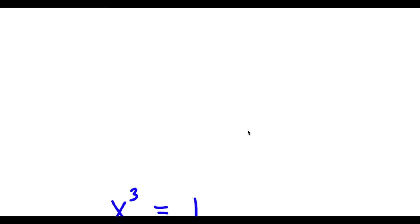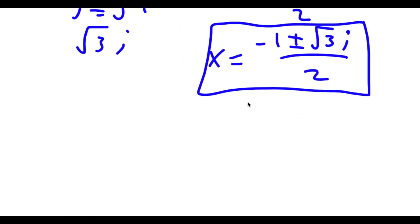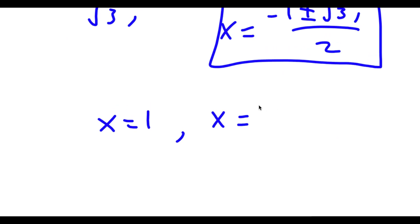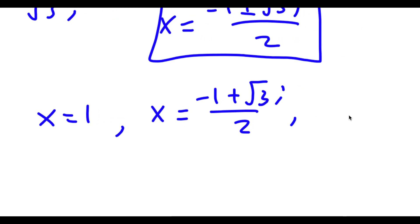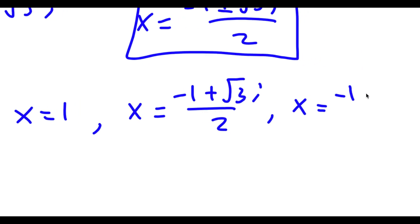So these are actually our three solutions of x. We have x equals 1, and x equals negative 1 plus or minus i times the square root of 3, all over 2.